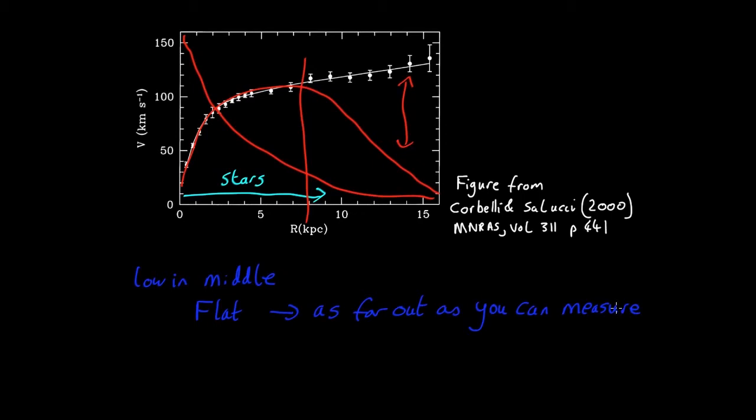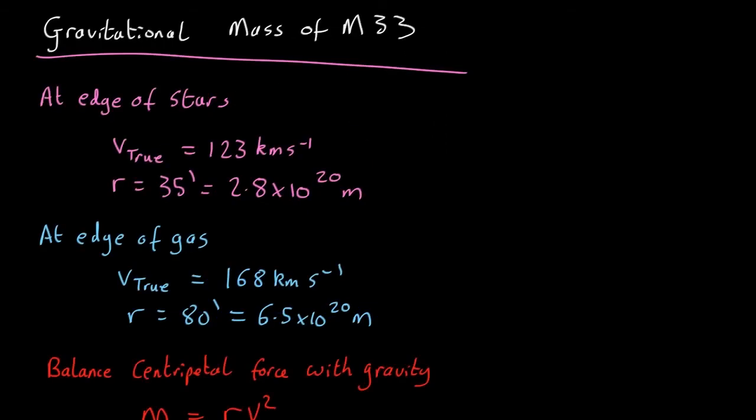So what could be going on here? So that's one problem. One unsolved mystery. The rotation curve is the wrong shape. But there's another one. If we actually do the numbers, the values for the mass come out very strange.